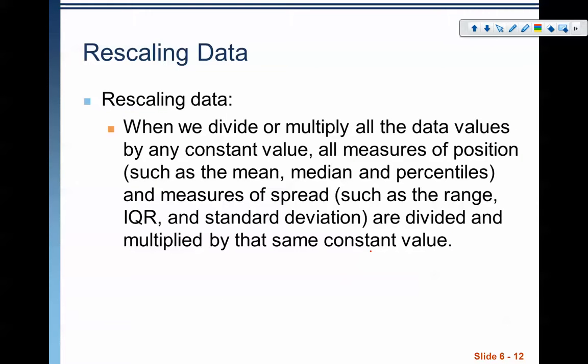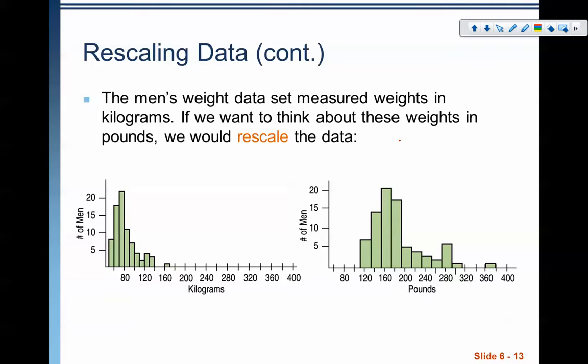What about multiplication and division? When we divide or multiply all the data values by a constant value, all measures of position like mean, median, percentiles, and the measures of spread - range, IQR, and standard deviation - are divided and multiplied by that same constant value.